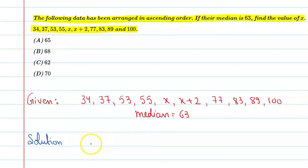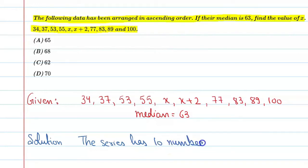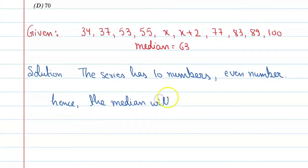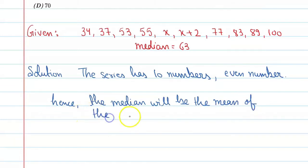The series has 10 numbers, which is an even number. Hence the median will be the mean of the two middle numbers.